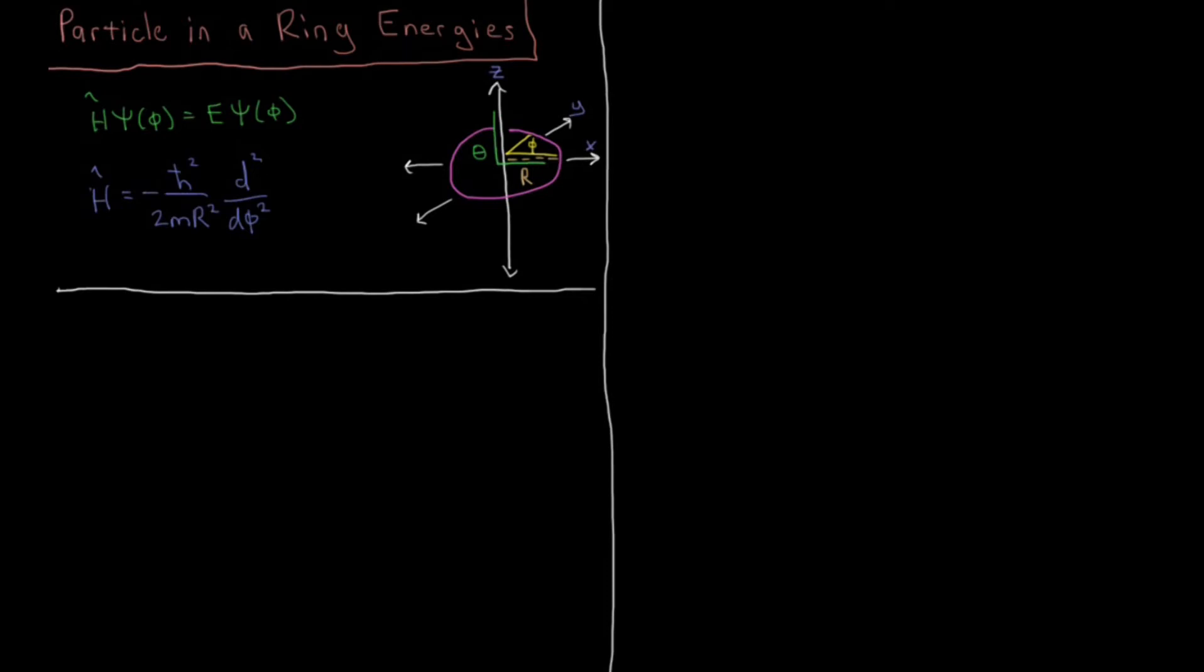Continuing on with particle in a ring, we showed last time how the specific restrictions of our wave function to a region with zero potential energy inside this ring here at r equals r and theta equals pi over 2, we could simplify our Hamiltonian from a three dimensional Hamiltonian to one which depends only on the azimuthal angle phi inside this ring.